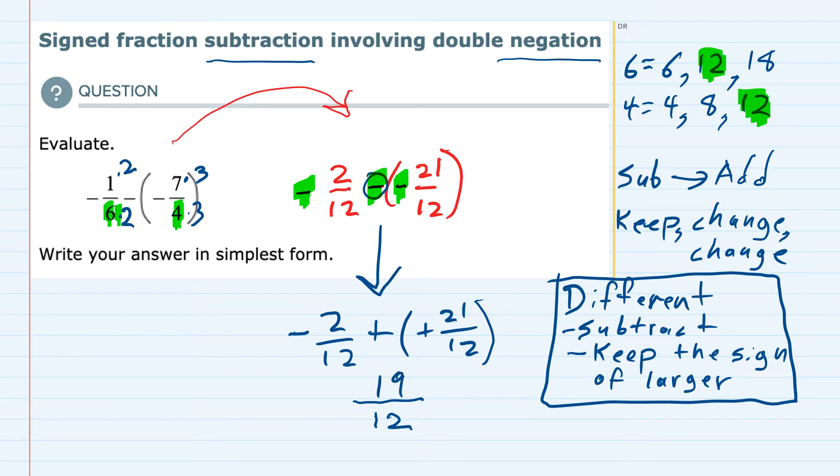And if I keep the sign of the larger, the larger one is the 21, which is positive. So 19 twelfths. This is in the simplest form, since the numerator and the denominator are only divisible by 1. I can't reduce this fraction.